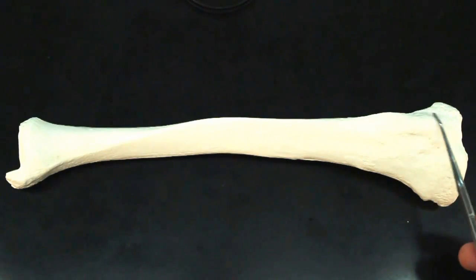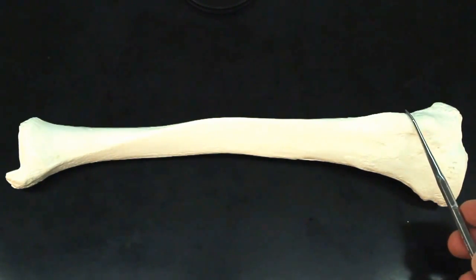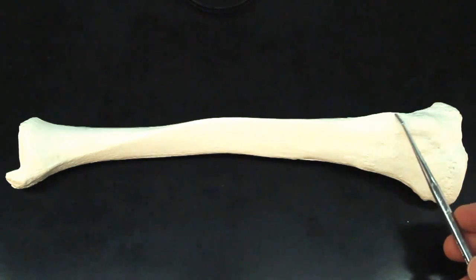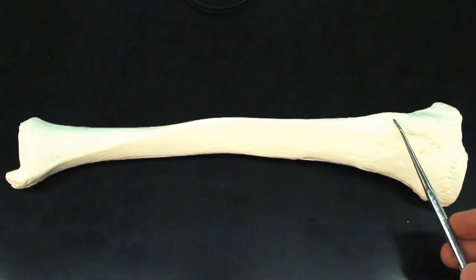You can pretty much feel this protrusion when you kneel down, because when you kneel down, that's the part of the bone that is touching the surface you're kneeling on. This is the tibial tuberosity.